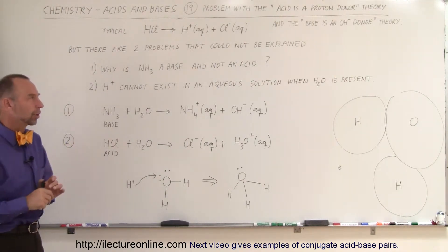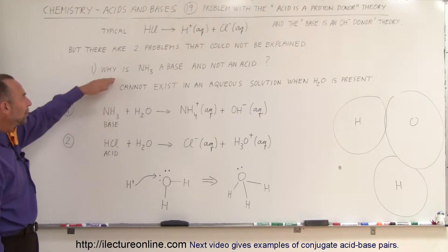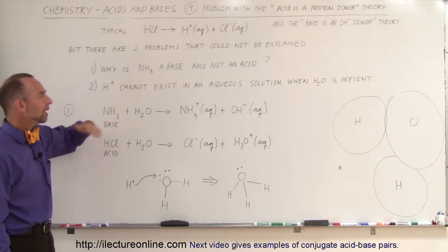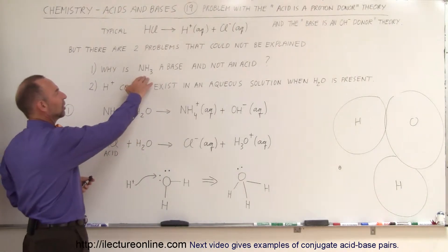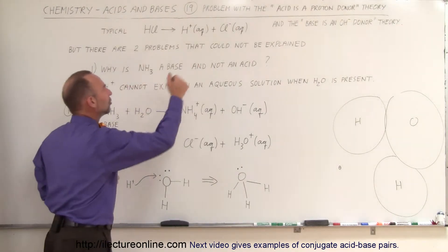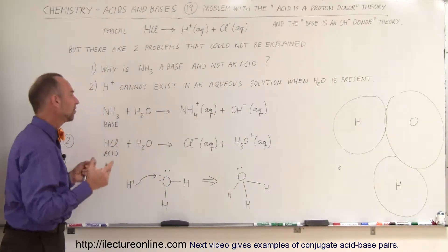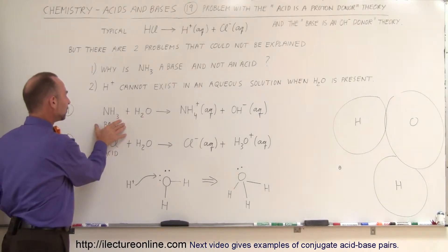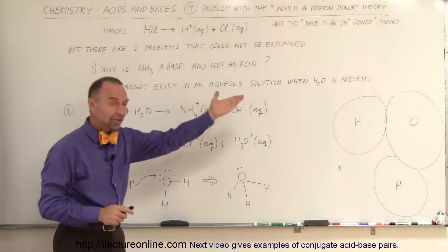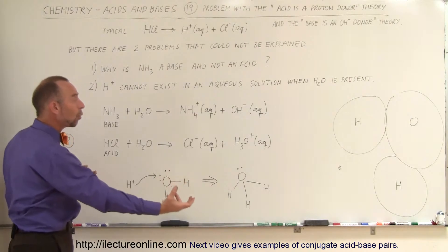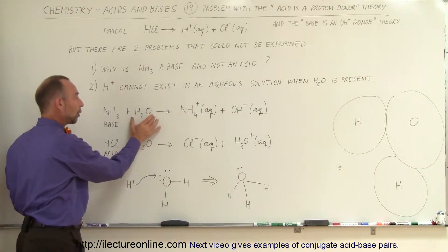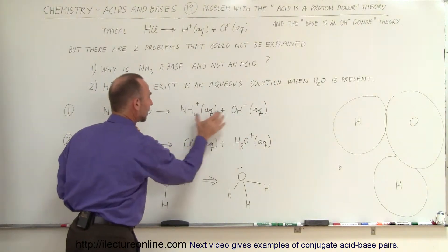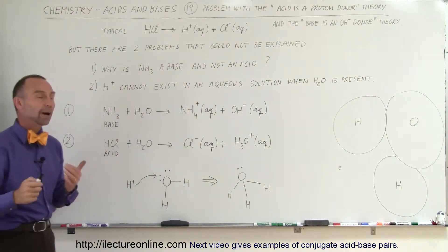But there are a lot of examples where that doesn't work. For example, ammonia is a base and not an acid, and the question is why. Look at all these hydrogen atoms that it could potentially donate, but it doesn't do that. Instead, it acts like a base, not by donating hydroxide ions but by simply acquiring a hydrogen ion from a water molecule, turning the water molecule into a hydroxide ion and thus producing the ammonium ion.